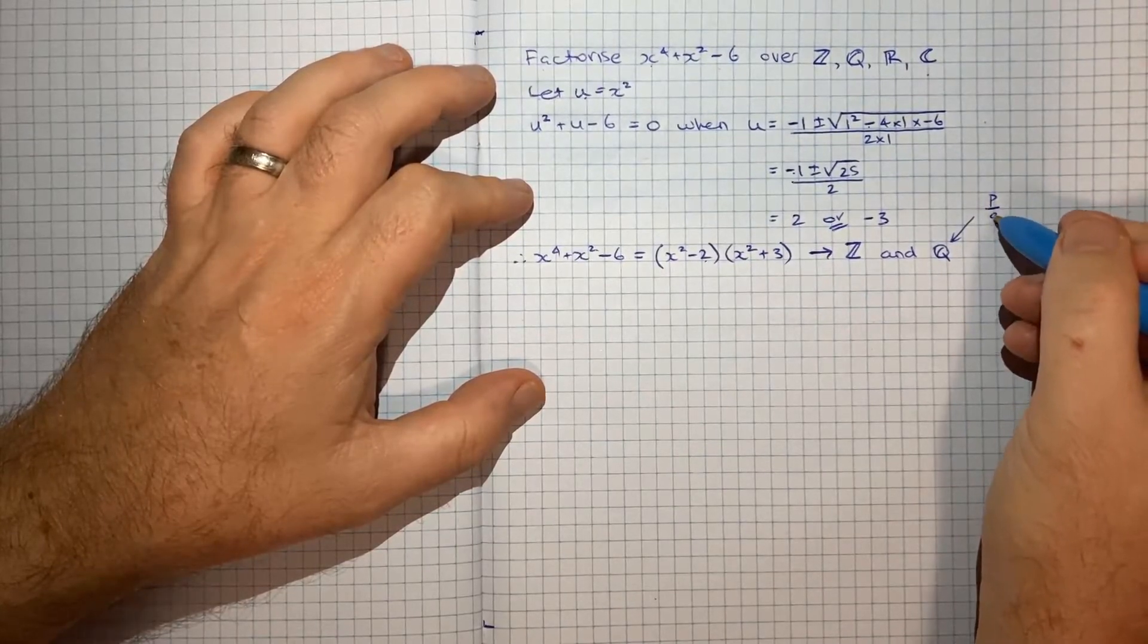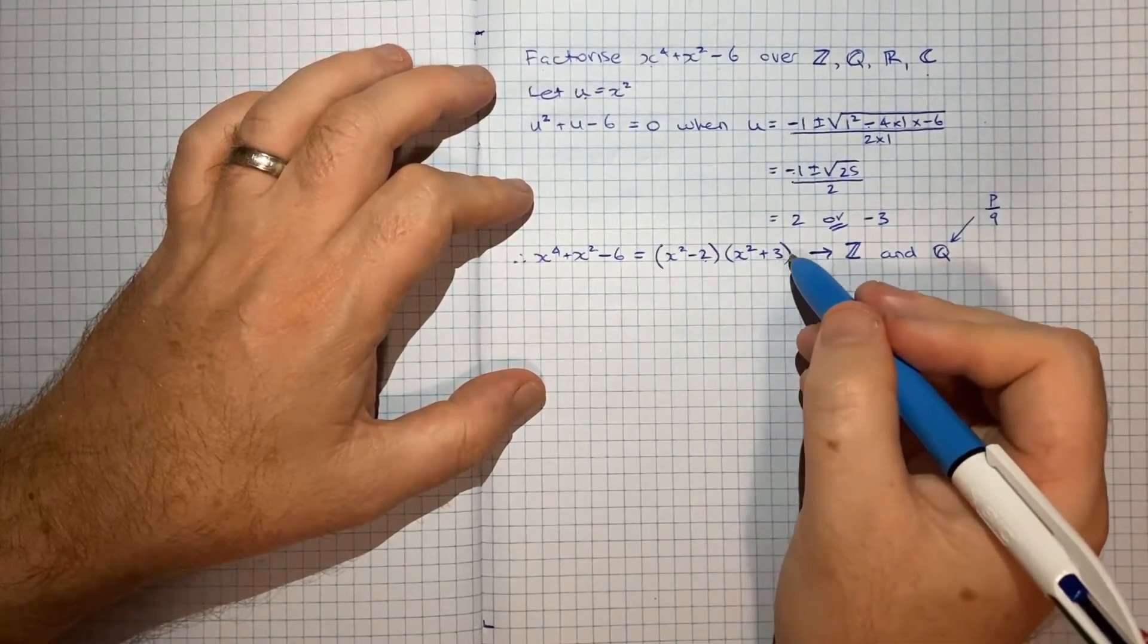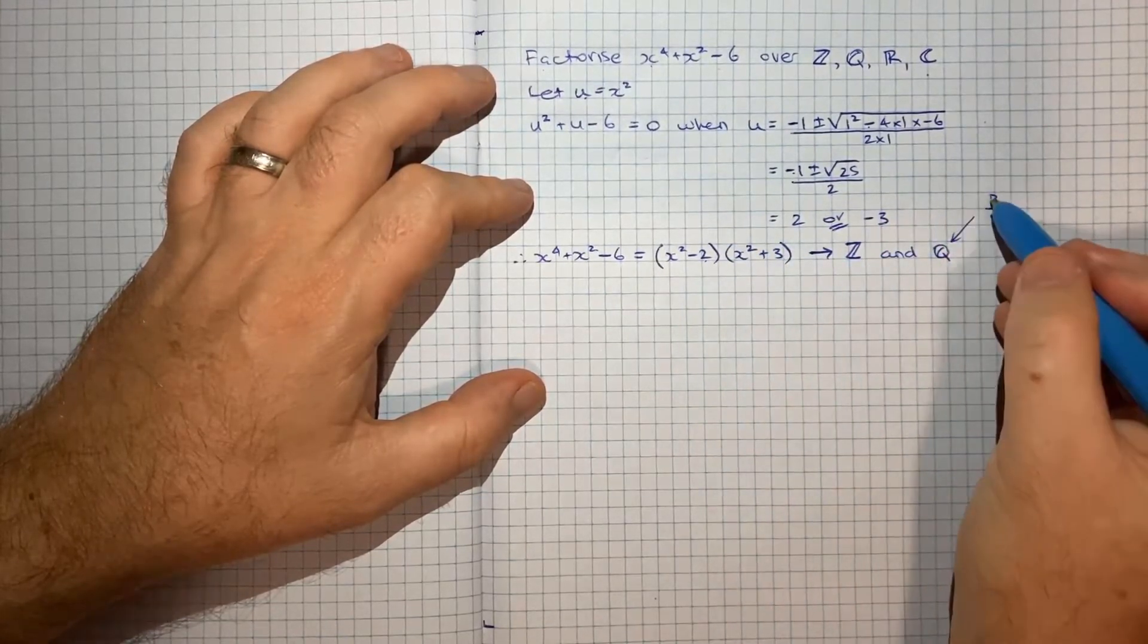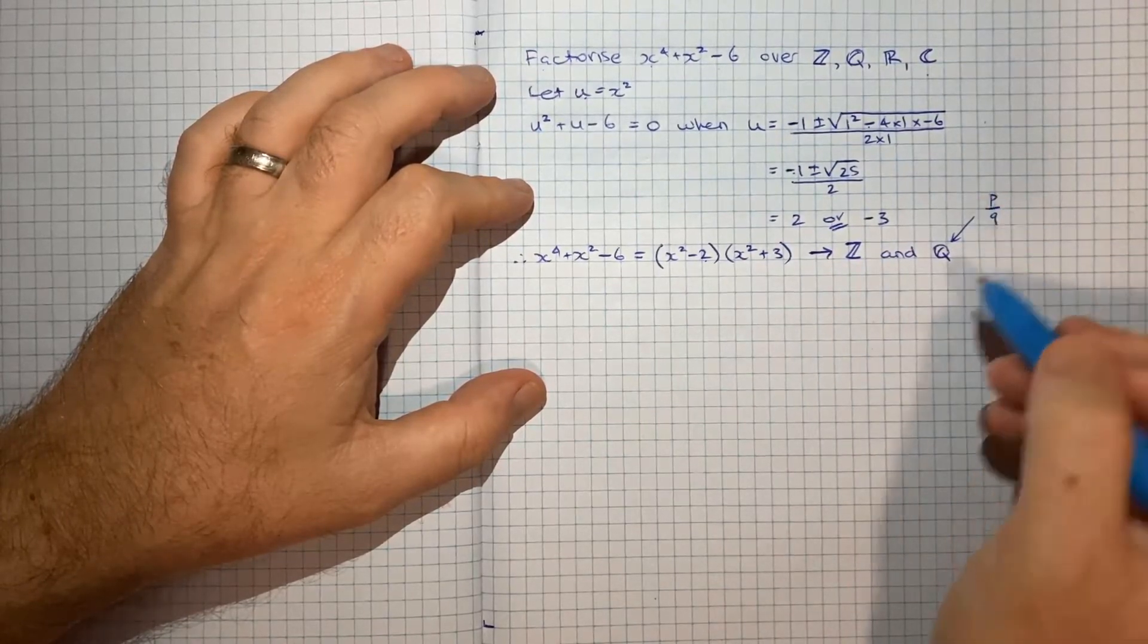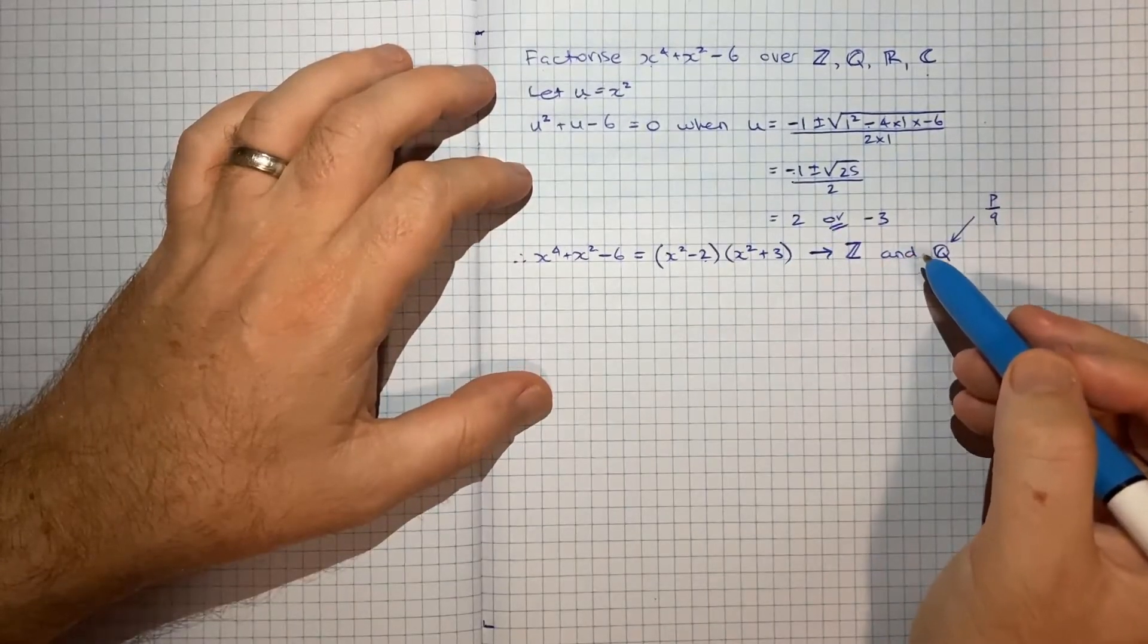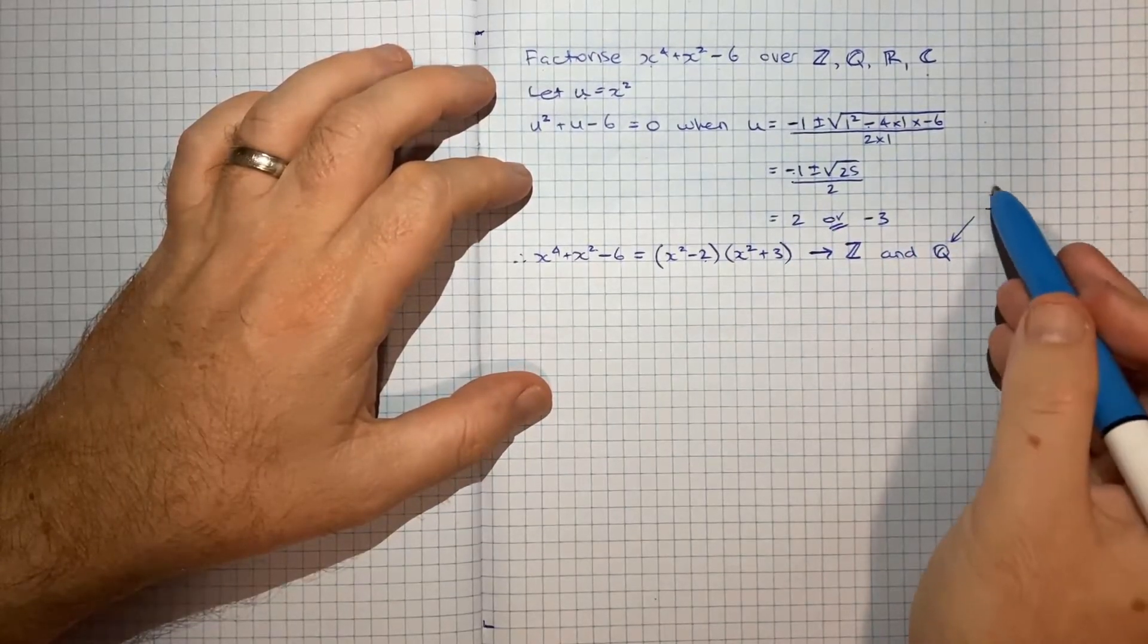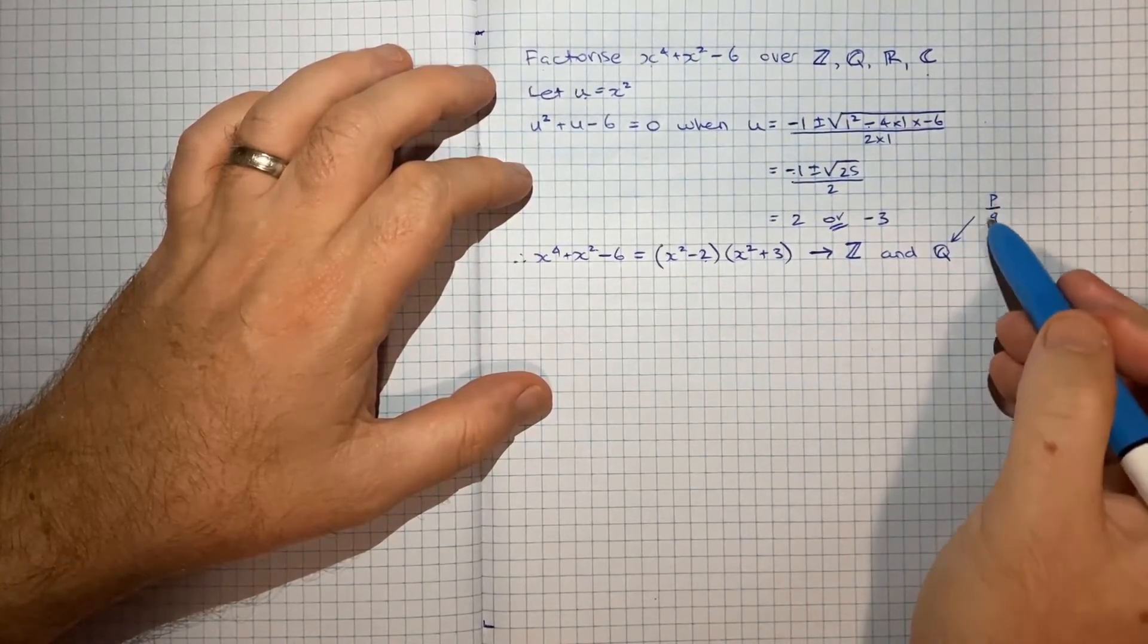A rational number is any number that you can write as p on q, where p and q are integers. And that actually does cover integers like negative 2 and 3, because you can just write them as negative 2 on 1 and 3 on 1. But there aren't any other numbers that are fractions, rational fractions, so not integers, but still rational.